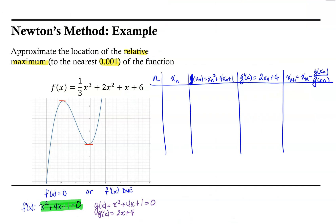Using −4 as our starting value: g(−4) = (−4)² + 4(−4) + 1 = 16 − 16 + 1 = 1, and g'(−4) = 2(−4) + 4 = −4. So our next x-value is −4 − (1/−4) = −4 + 0.25 = −3.75. Our first Newton's method approximation is x₁ = −3.75.